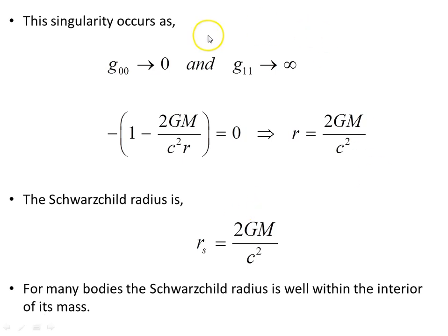This singularity occurs as the time component goes to zero and the radial g11 component goes to infinity. We take the time component and set it to zero. We can solve it for this particular value of the radius, and this particular value will cause this component of the metric to blow up, to go to infinity and become undefined.